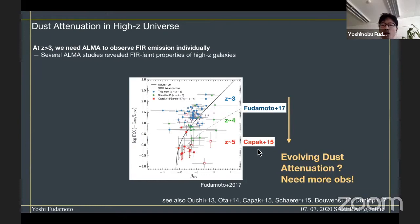For instance, a couple of years ago, Capak et al. 2015 has shown that indeed the IRX-beta relationship could be different in a very high-redshift universe. Compared to the lower-redshift galaxies, this infrared emission is much fainter than expected from the UV colors. However, these observations are based on a relatively small number of observations, so we need to increase sample size to confirm and expand these studies.